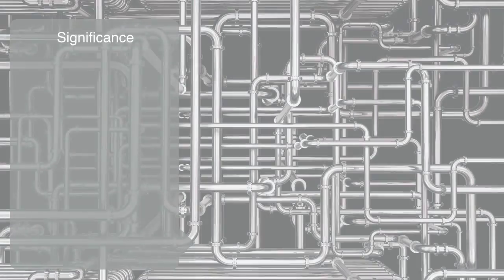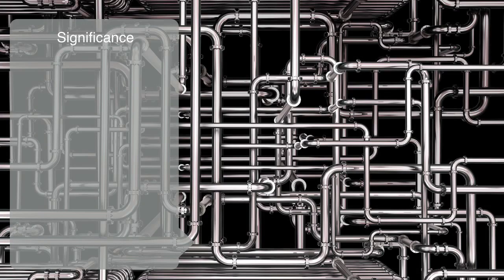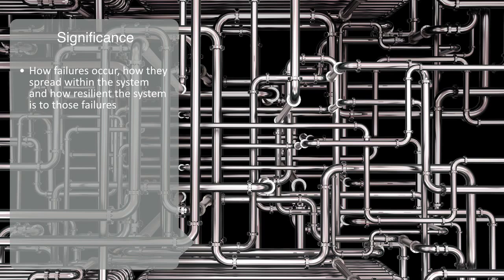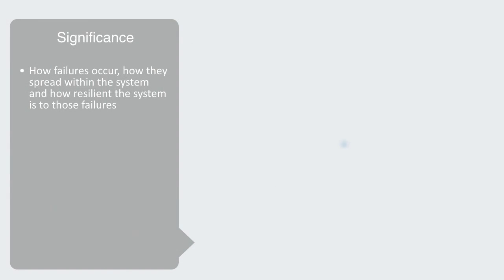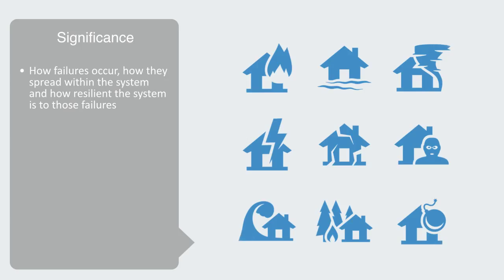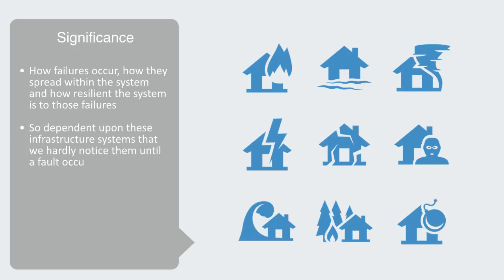With the modeling of infrastructure robustness, we're interested in how failures occur, how they spread within the system, and how resilient the system is to those failures. Researchers are particularly interested in critical infrastructure for obvious reasons. We are so dependent upon these infrastructure systems that we hardly notice them until faults occur. Therefore, the ability to model and analyze the behavior of these critical infrastructures and their interdependencies is of vital importance.